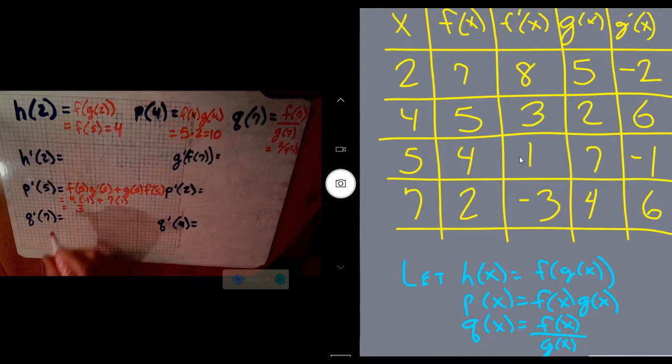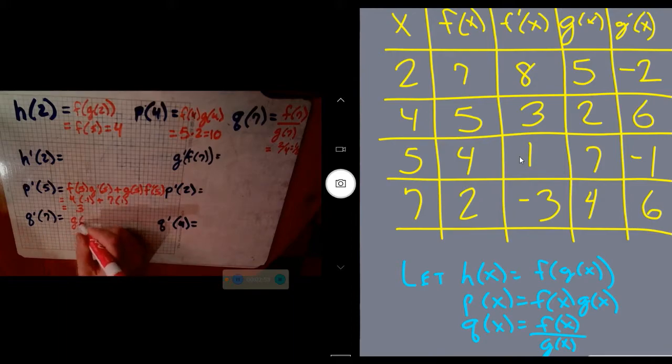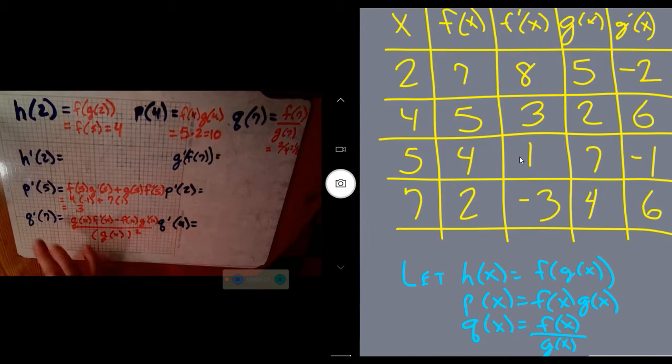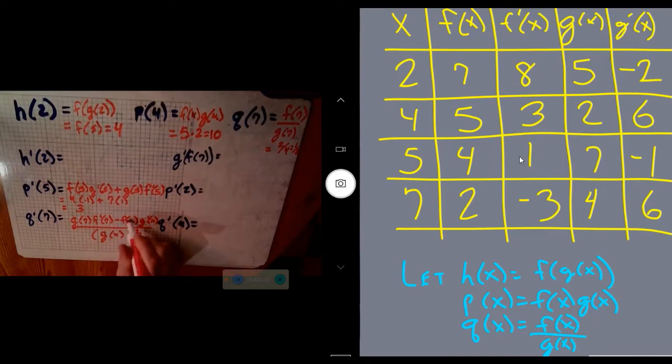When we do quotient rule, that derivative is low d high minus high d low all over low squared. The bottom being g(x), and we're squaring it. Now, again, we have a place we want to specifically evaluate. We can plug in 7 using the table for all those values.